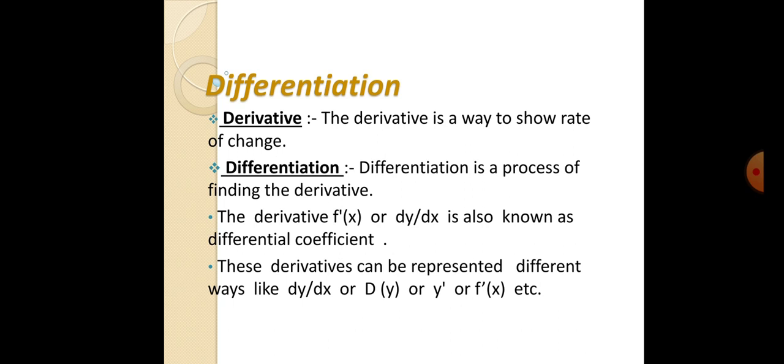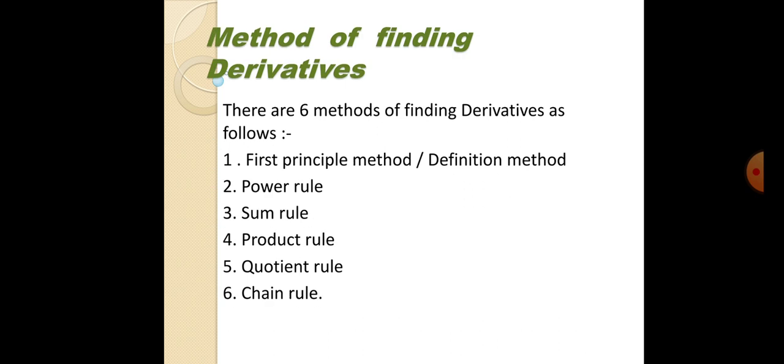These derivatives can be represented in different ways. Our next point is the method of finding derivatives. There are six methods of finding derivatives as follows: first is the first principle method or definition method, second is the power rule, third is the sum rule, fourth is the product rule, fifth is the quotient rule, and sixth is the chain rule.